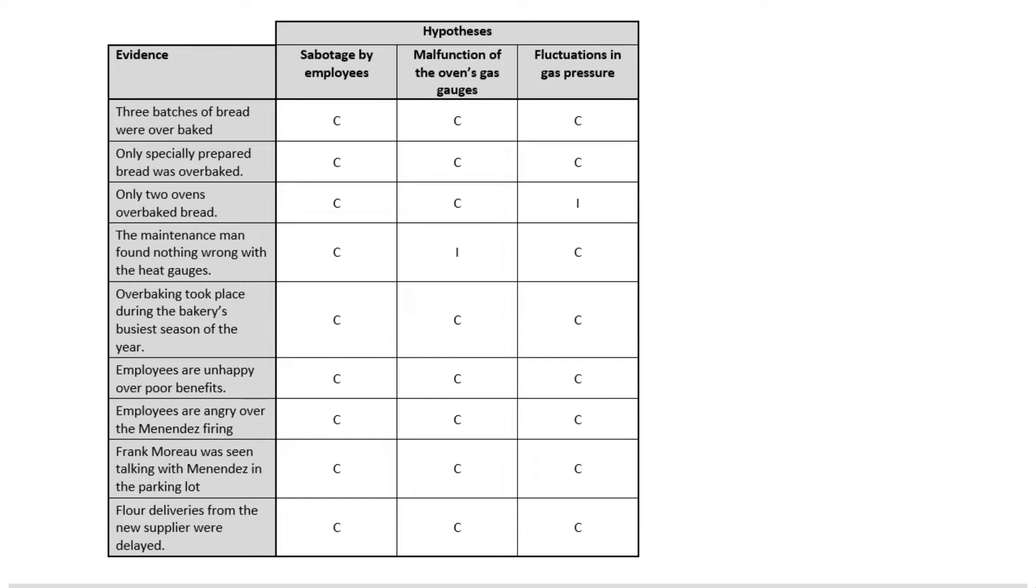It's also possible that the ovens were malfunctioning, probably the gas gauge was letting too much gas in and the ovens were burning too hot. Or maybe it was just fluctuations in gas pressure, maybe it wasn't necessarily the gauge in the oven but something about the line. So we have these three hypotheses and we're going to think about each of those pieces of evidence to see how they line up.